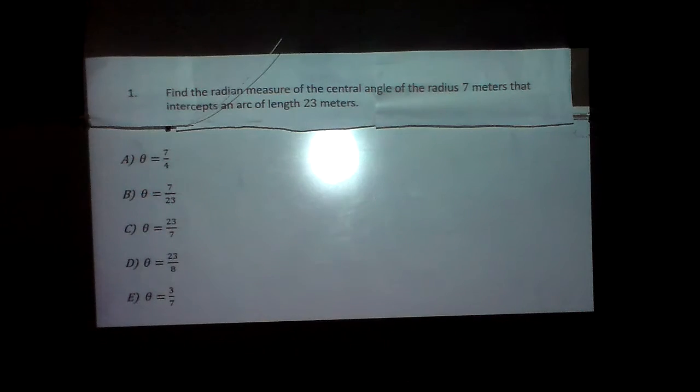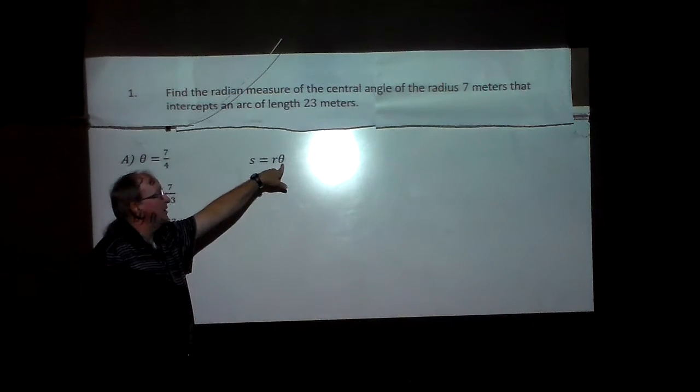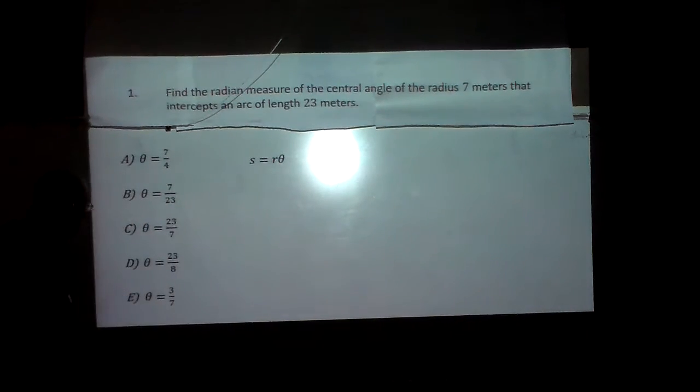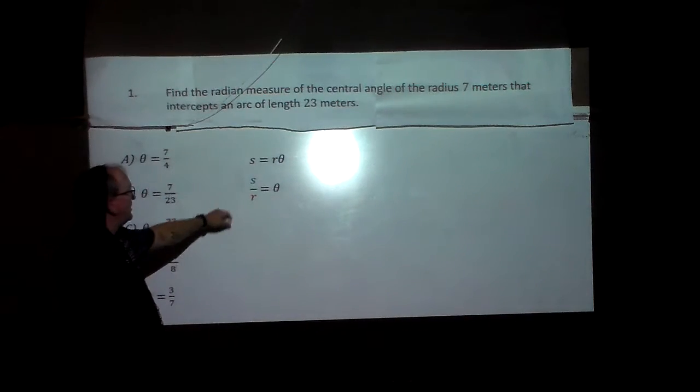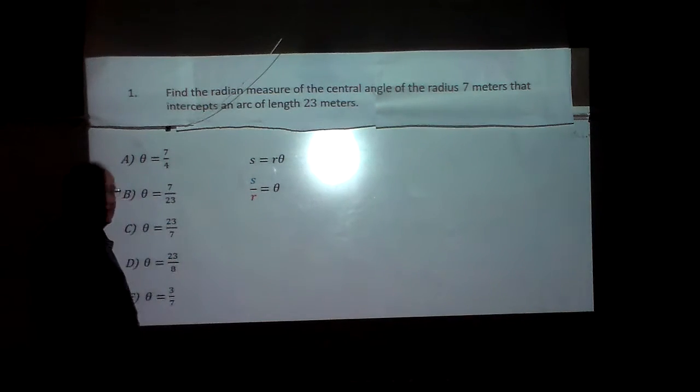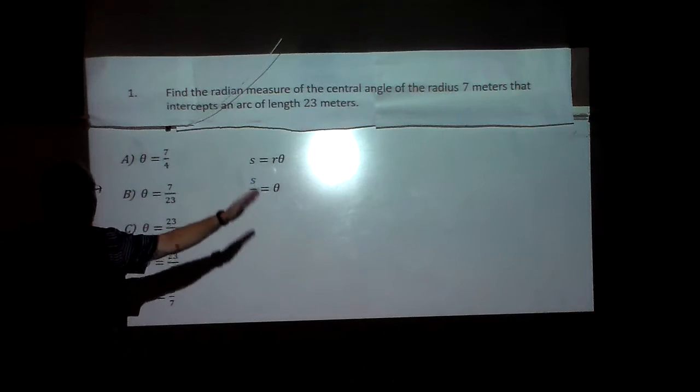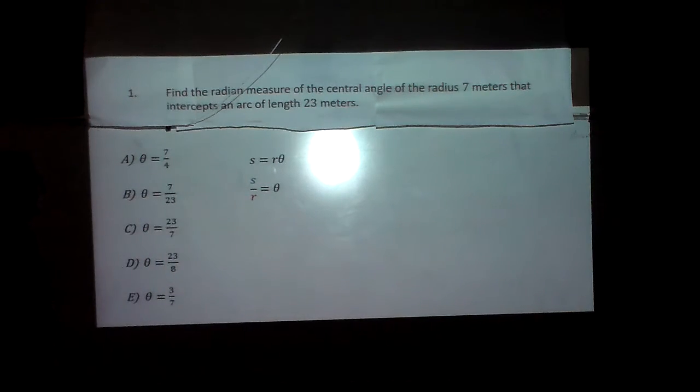So first off, we have the radian measure of a central angle with a radius of 7 meters that intercepts an arc of 23 meters. Remember our formula: arc length is equal to the radius times theta, where theta is in radians. But I need to find theta, so I take each side and divide it by R. The arc length divided by the radius is what theta is. Remember, the radian is basically how many radii are going around the arc of the circle.